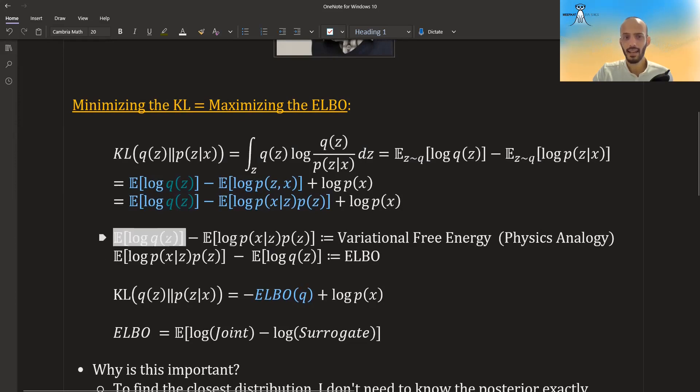In any case, if you take the minus of that, if you just replace the terms here, you get what is called the evidence lower bound or the ELBO for short. So you can see that the KL divergence of Q and the posterior is equal to minus the ELBO plus the log of the evidence. Okay, and the ELBO, as you can see, is just the expected value of the log joint minus the expected value of the log surrogate.